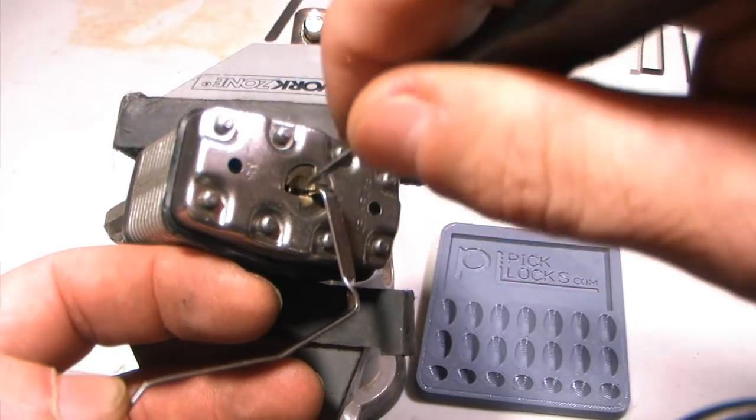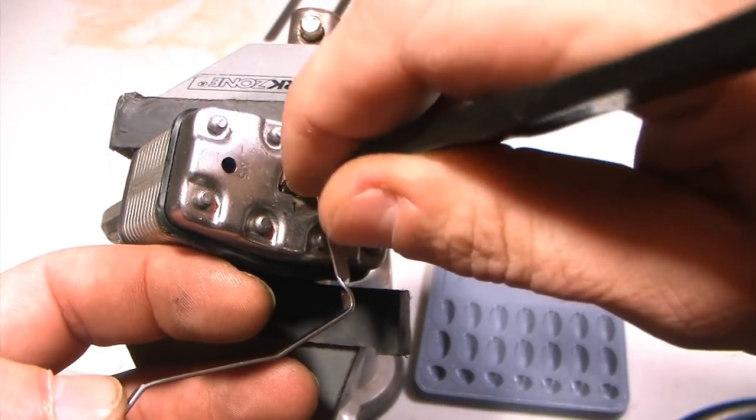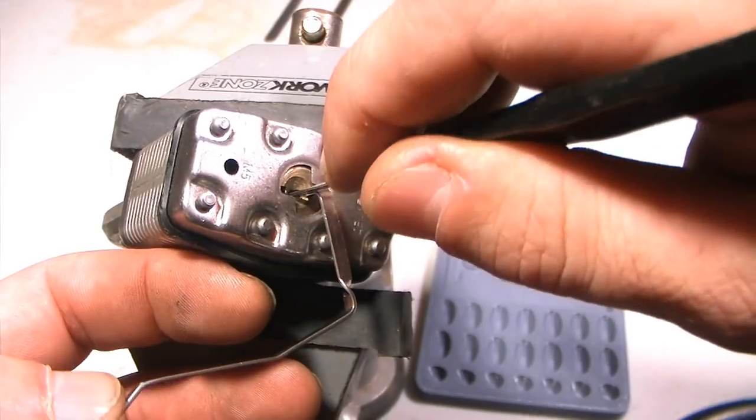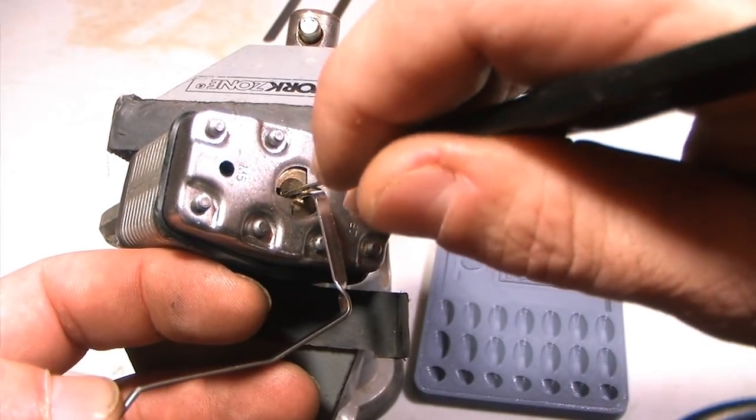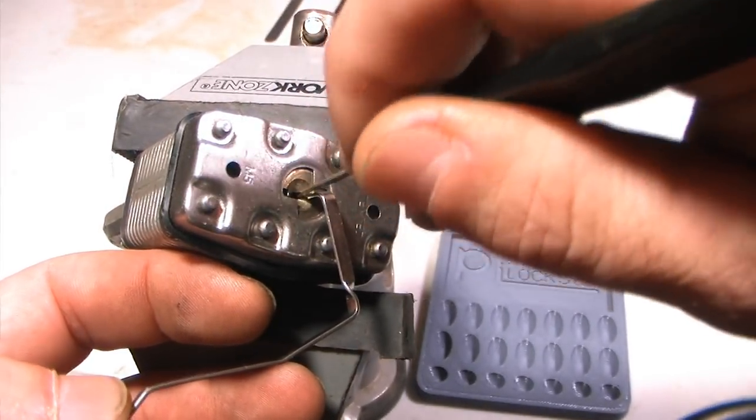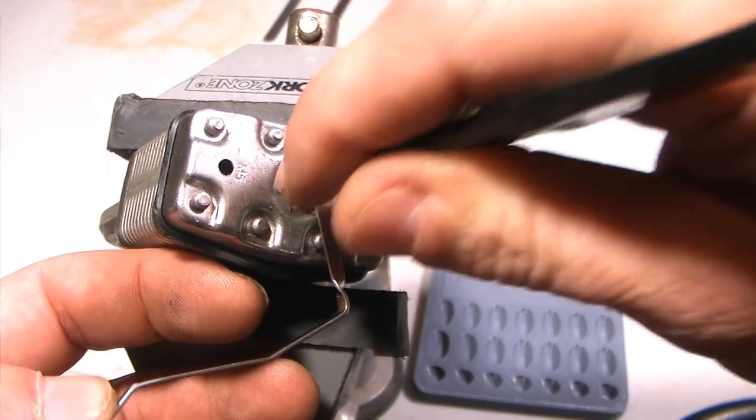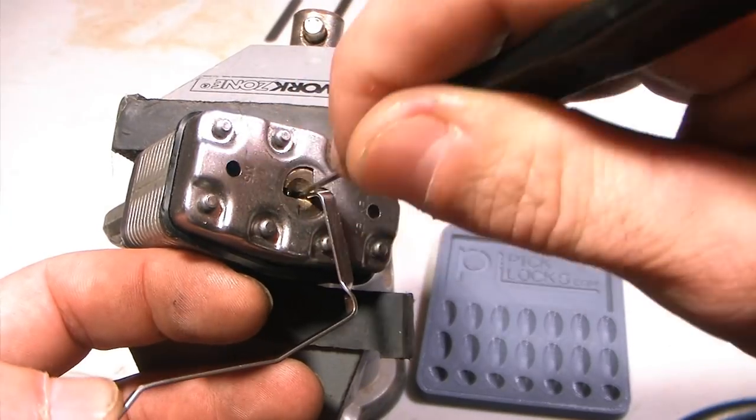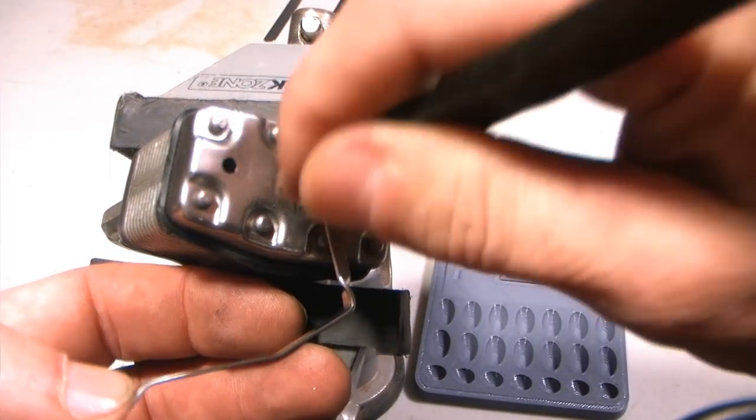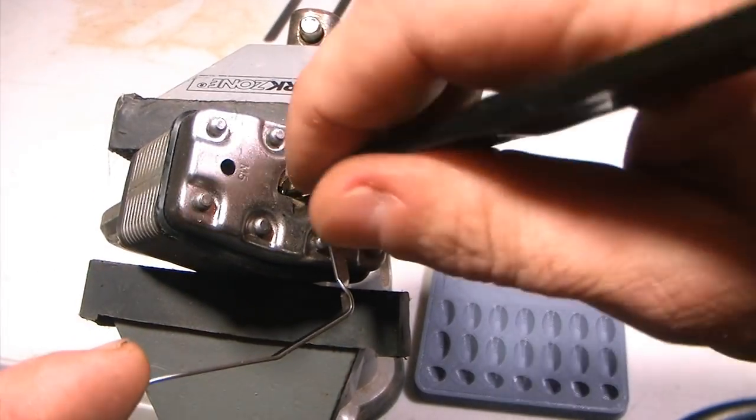That was a good set. I've got the back pin set—feels like there's a high back pin there. Sometimes I'll do a little lifter picking once I get toward the end. I like to rake and see what I can catch in the beginning, then switch over to my finger there.